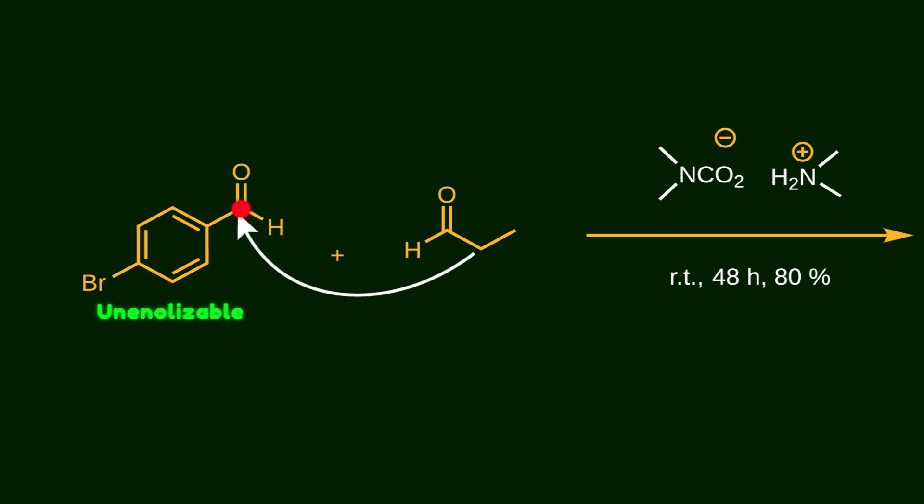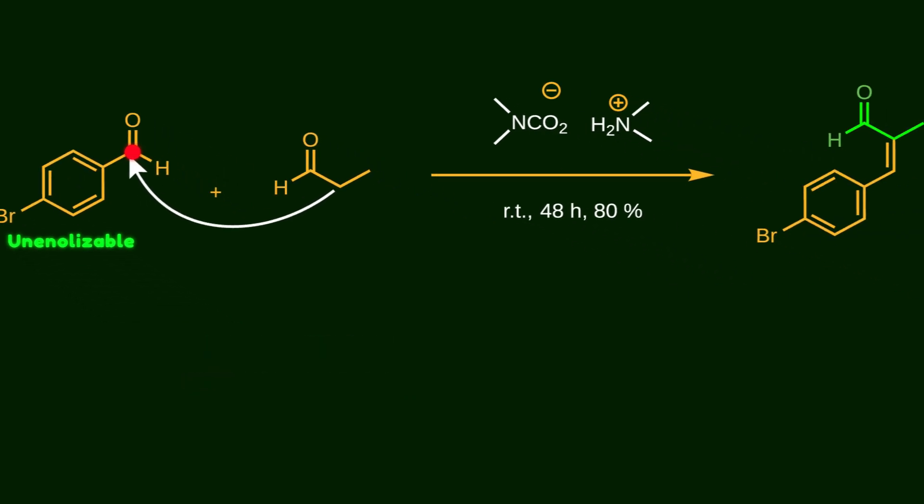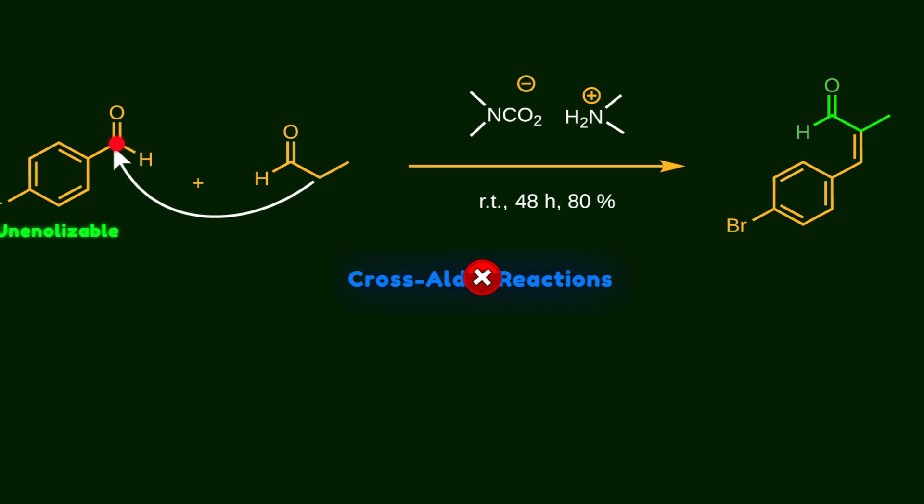Notice that benzaldehyde is unenolizable. So it can only be attacked, not do the attacking. That means it can only react with an enolizable aldehyde, which can form the enolate or enol. Using this strategy prevents cross aldol reaction and increases the yield of the desired product.